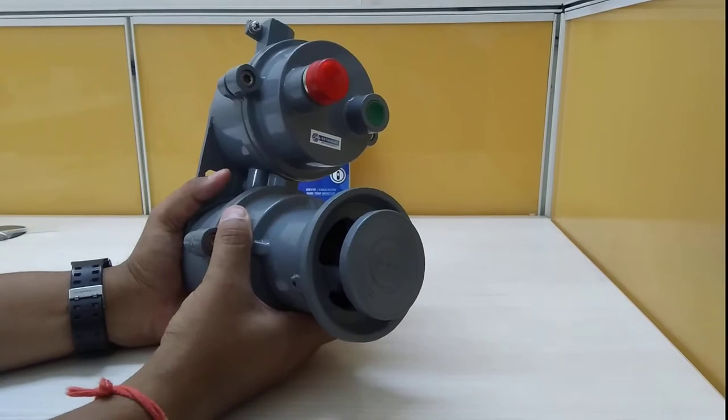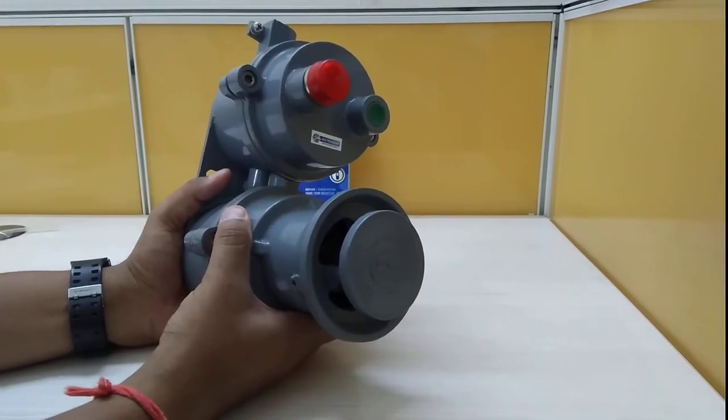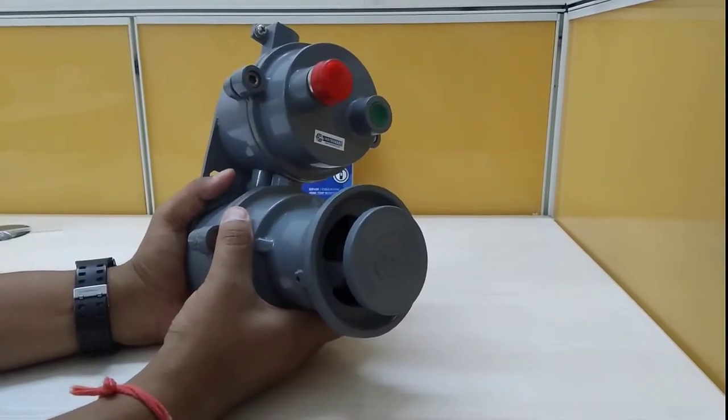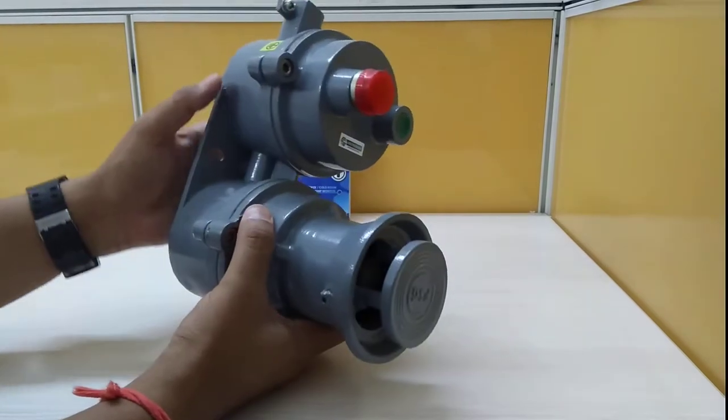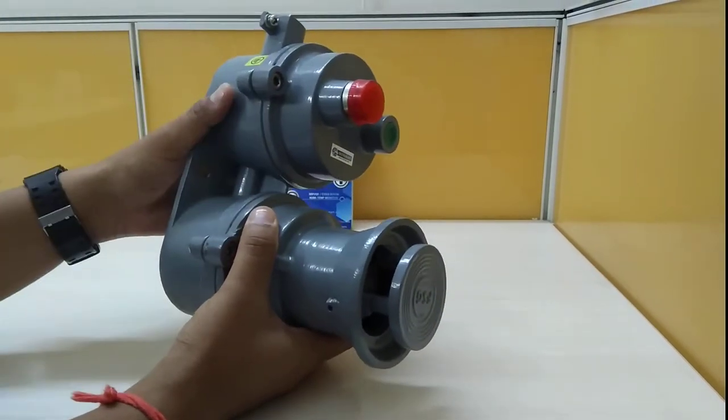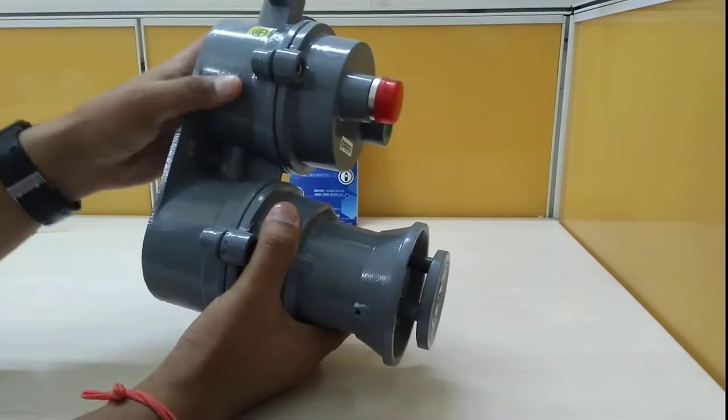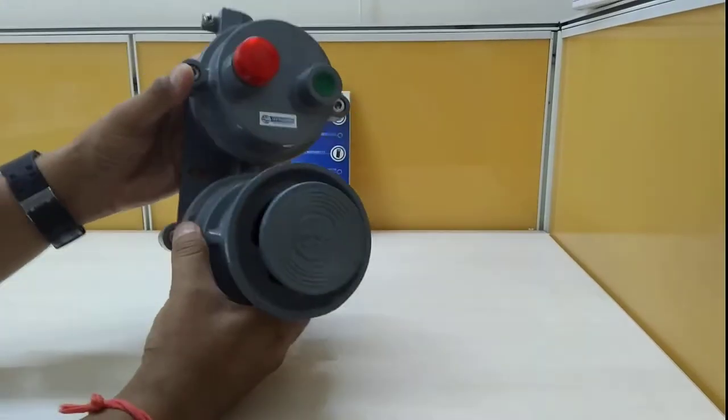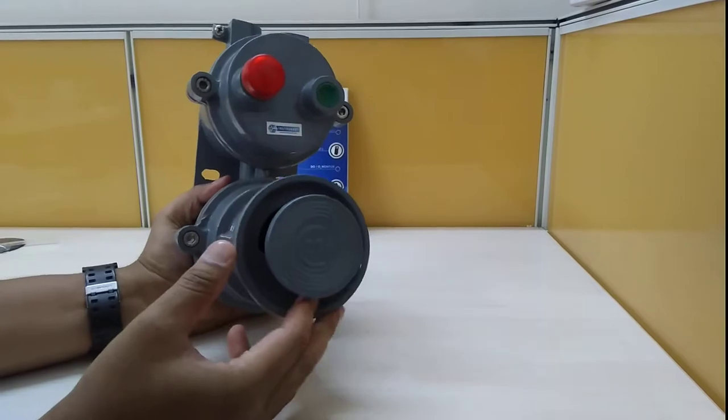This is used in zones like Zone 2A, 2B, and in fact 2C also. Whenever there's a presence of hydrogen or any other flammable zone, we use this flameproof hooter. This hooter comes with a hooter option, a flasher, and an acknowledgement key.